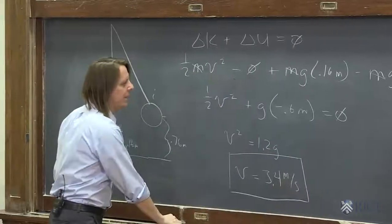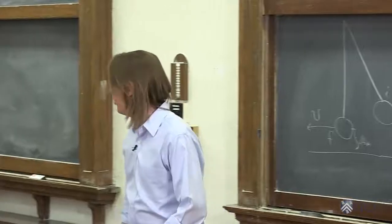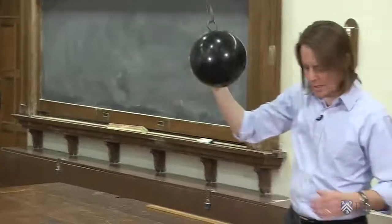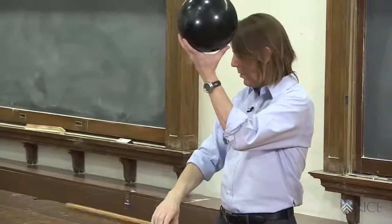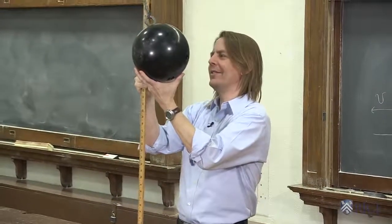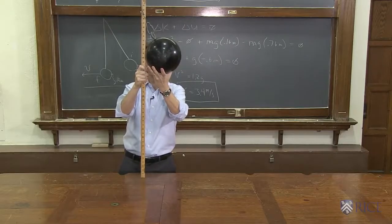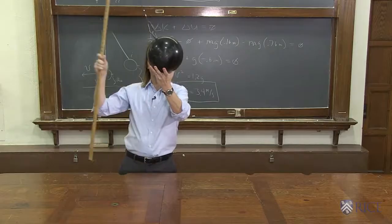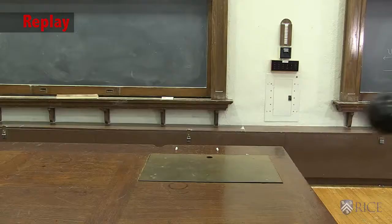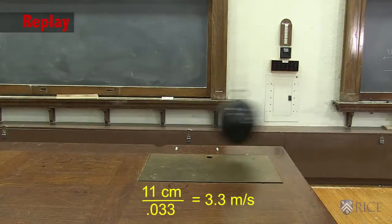So let's see if we get 3.4 meters per second. Here we go. I'm going to hold it. I think about here is about where it was at 0.76. Right there, it's sitting at 0.76. Pull this out and let it go. And we look with the slow-mo camera, and sure enough, 3.4 meters per second.